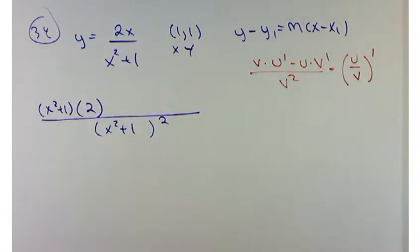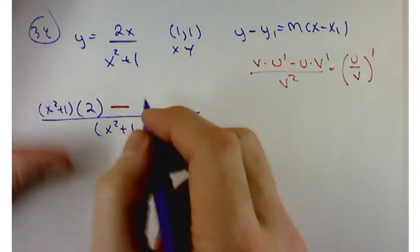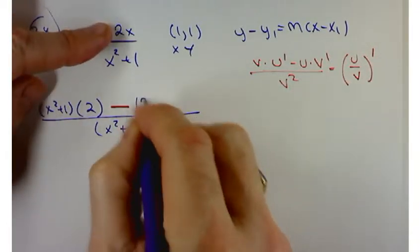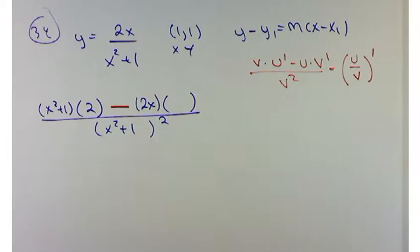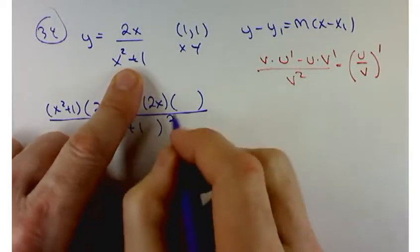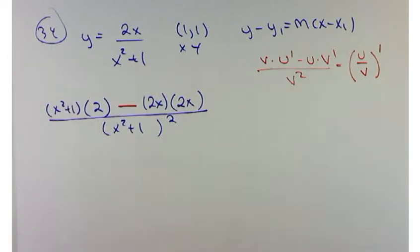And here's an important step. Write down that minus. A lot of times people want to put a plus there. It's a minus. Minus the numerator, which is 2x, times the derivative of the denominator. The derivative of the denominator, 2x.